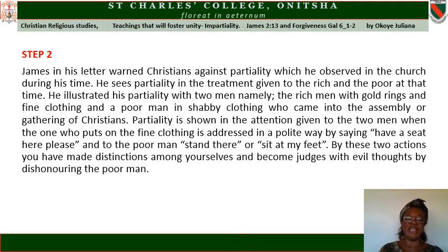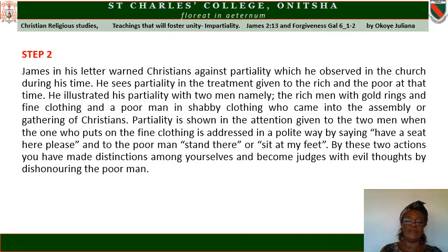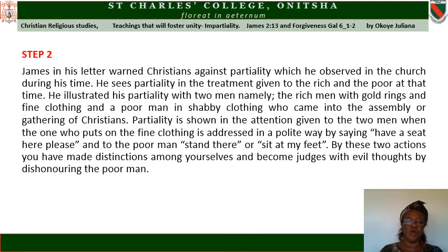James, in his letter, warned Christians against partiality, which he observed in the church during his time. He sees partiality in the treatment given to the rich and the poor. He illustrated his teaching with two men — a rich man with gold rings and fine clothing, and a poor man in shabby clothing — who came into the assembly of Christians. James sees partiality in the attention given to the two men: the one in fine clothing is addressed politely, 'Have a seat here, please,' while the poor man is told, 'Stand there or sit at my feet.' By these two actions, Christians have made distinctions among themselves and become judges with evil intention by dishonoring the poor man.